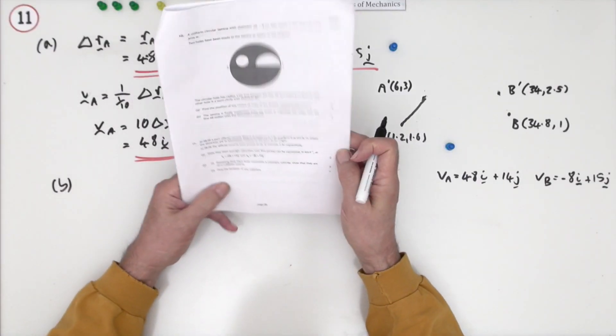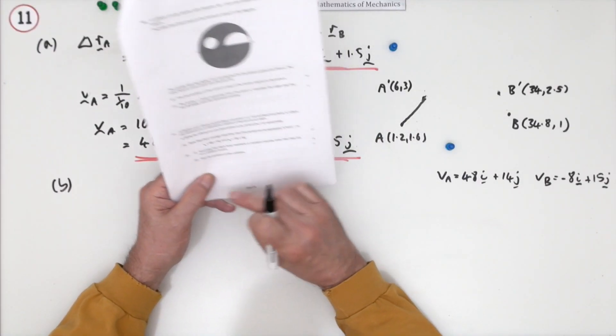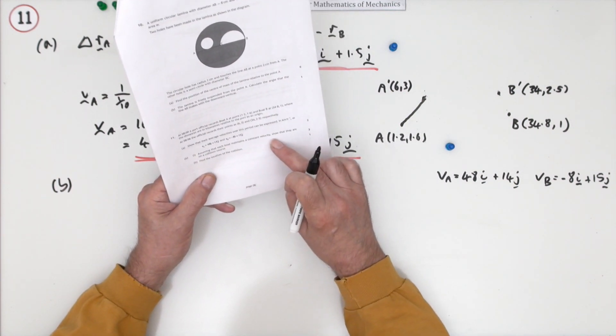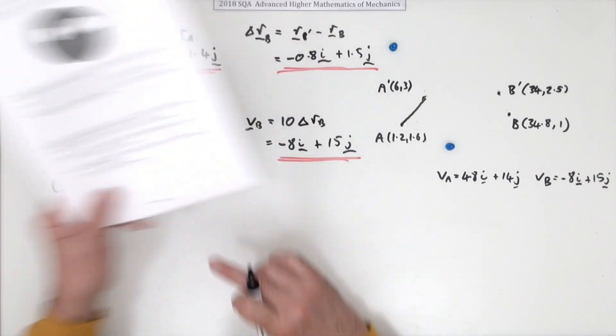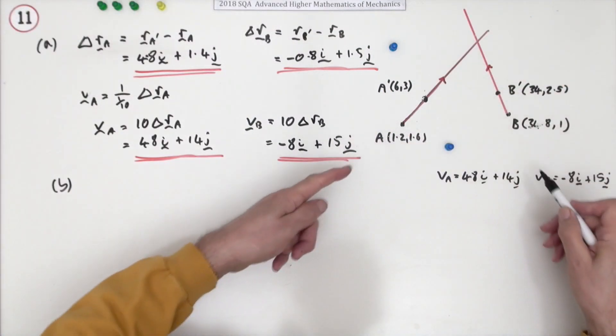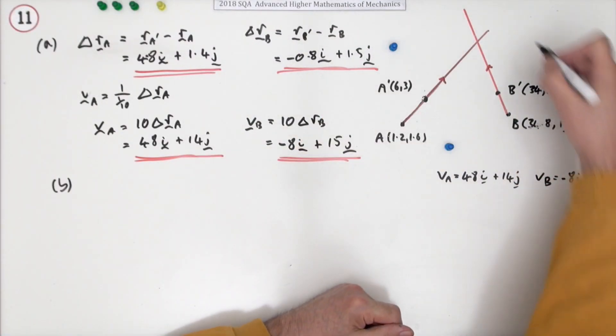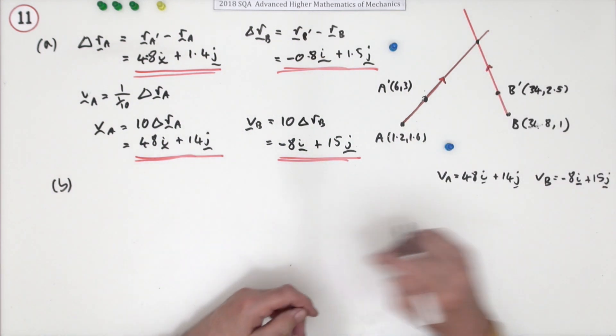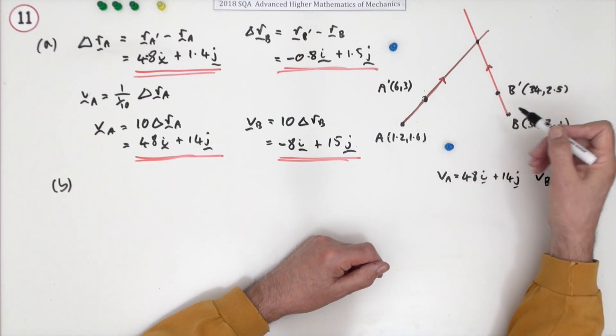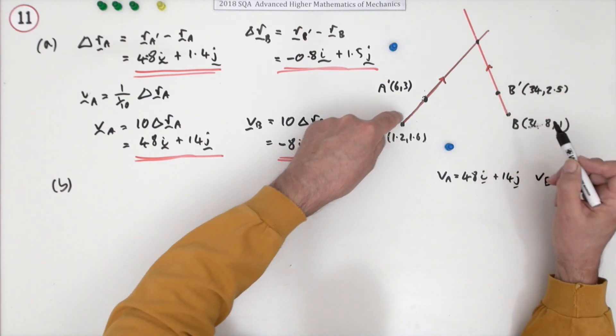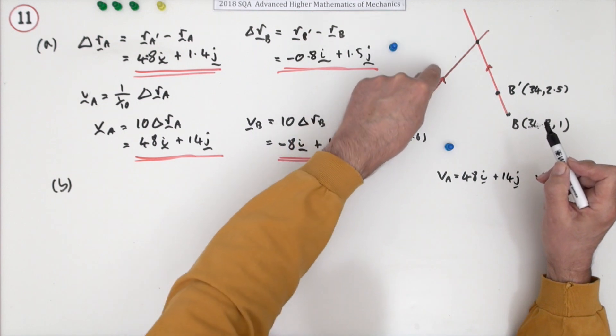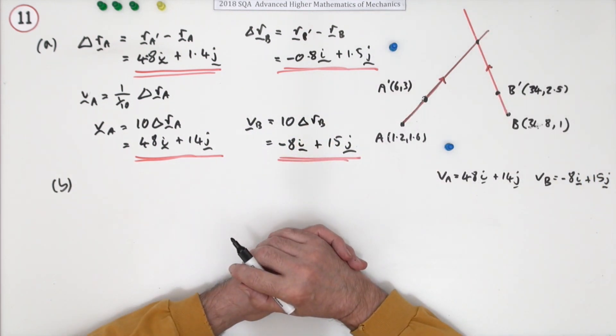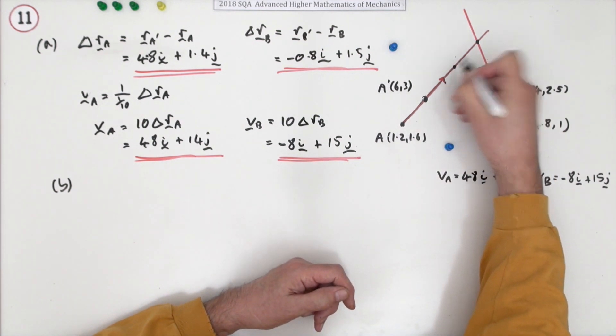So part b now, well there's two parts to part b. Part b one for three marks: assuming that each boat maintains a constant velocity, show they're on a collision course. So you have to show if they keep on going like that at constant speed they're going to collide at some point or other. Well there's a couple of ways of doing that. One way would just be to show that if you track their position by their position vectors that at a certain time they'll both be at the same point.